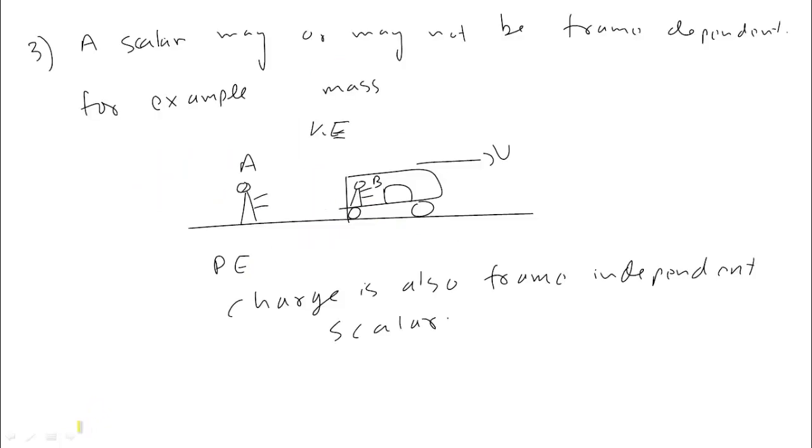Next property: A scalar may or may not be frame dependent. For example, take mass. It doesn't matter from where you observe the mass - whether you see from earth, moon, or any corner of the planet, the mass value will not change.